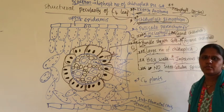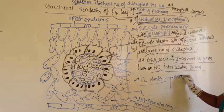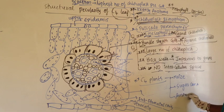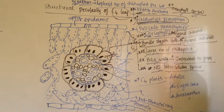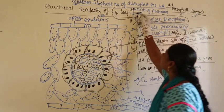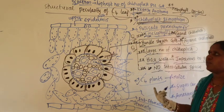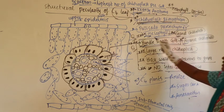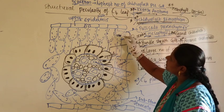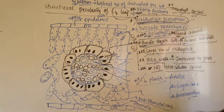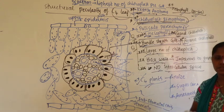C4 plants include maize, sugarcane, amaranthus, and wheat. C4 plants show two structural peculiarities: Kranz anatomy — the ring-like arrangement of bundle sheath cells — and chloroplast dimorphism, where mesophyll has granal chloroplasts and bundle sheath cells have agranal chloroplasts.